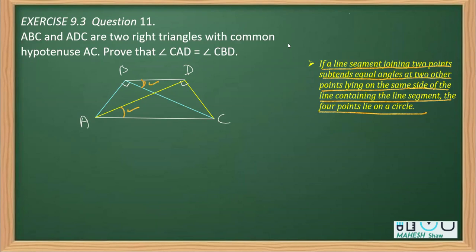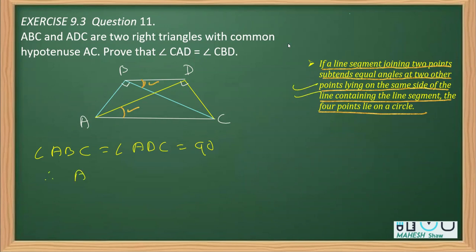So first we write: angle ABC equals angle ADC, which equals 90 degrees. Then, applying the property, we state that therefore ABDC are concyclic.